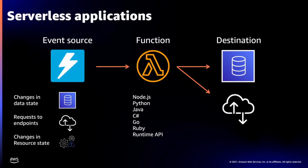When we're talking about serverless, I want to focus specifically on a serverless application centered around AWS Lambda. Lambda is a compute service where you create your application code in Lambda functions. We support six main managed runtimes — Node, Python, Java, C Sharp, Go, and Ruby — where we help with patching, updating, and we release new ones periodically. We also have a Runtime API which allows you to bring any language you want to Lambda.